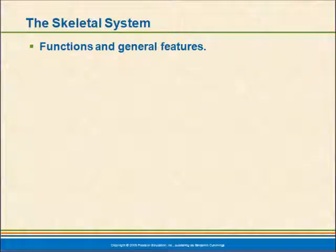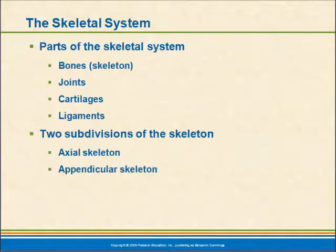This presentation is the first of several parts of the skeletal system, which is Chapter 5. What we're going to talk about today is the parts of the skeletal system, which consists of more than you might think. We imagine the skeletal system as just being bones, but the fact is it contains all of the joints and materials that make up the joints — cartilages, ligaments, and other materials that hold the skeletal system together.